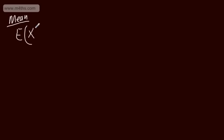Let's start off with the mean. We say that this is the expected value of X, or E(X), and we use the capital here, which is going to be equal to the sum of x multiplied by the probability that X is equal to x. All we're doing is taking each value of x, multiplying it by its probability, and then adding it up.